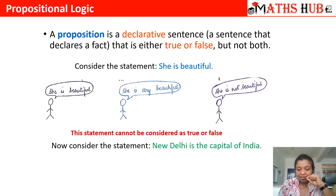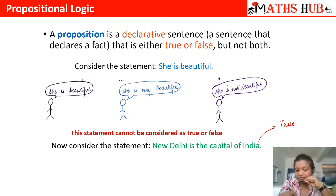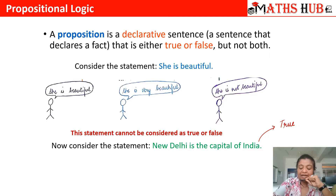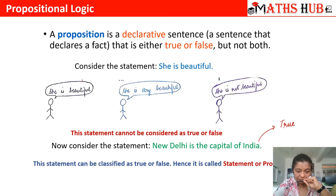But when I say 'New Delhi is the capital of India' — if it is the capital, everybody will agree and say the statement is 100% true. Universally, it would be a true statement. And if it is not the capital, everybody will agree it is not the capital of India and it will become a false statement automatically. So 'New Delhi is the capital of India' can be marked as a statement or a proposition.